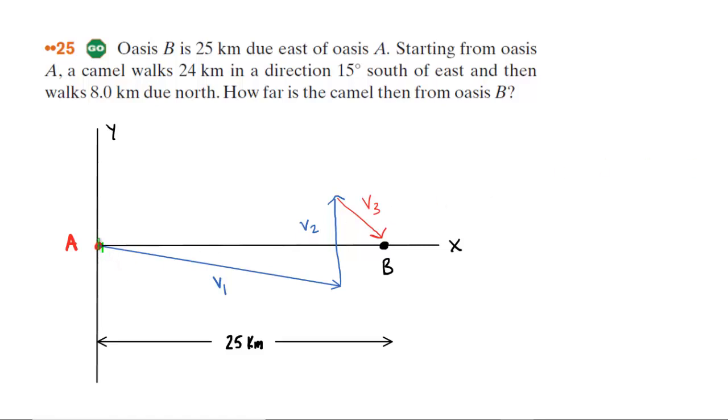We've drawn Oasis A located at the origin of a standard XY coordinate system, and then we have Oasis B located 25 kilometers due east of that point. We've labeled that 25 kilometers here.